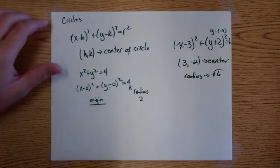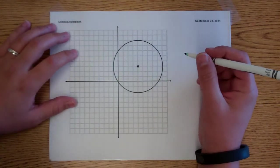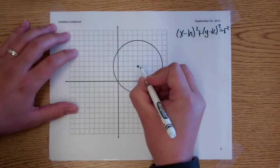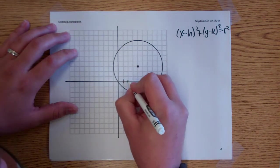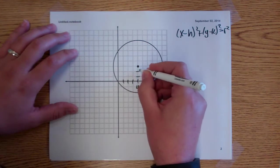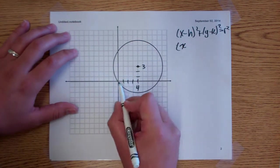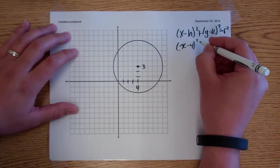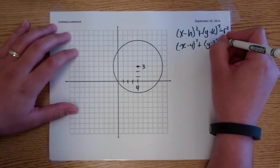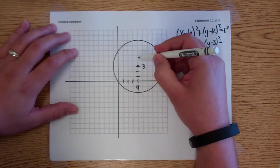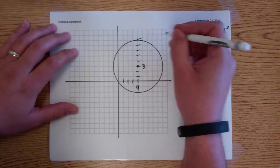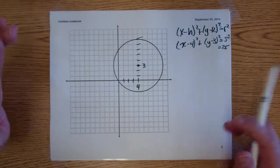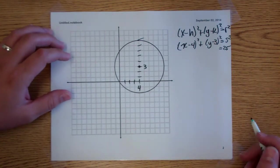So that's your standard form. Now if you have a circle on a coordinate plane, we still have (x minus h) squared plus (y minus k) squared equals r squared. To find h and k, you simply find the center point — here that's (4, 3). Since this is a positive 4, it's going to be x minus 4 squared. And we have y minus 3 squared. For r squared, you simply find your radius: start at the center and count to the edge — 1, 2, 3, 4, 5 — so this is 5 squared, or equals 25.